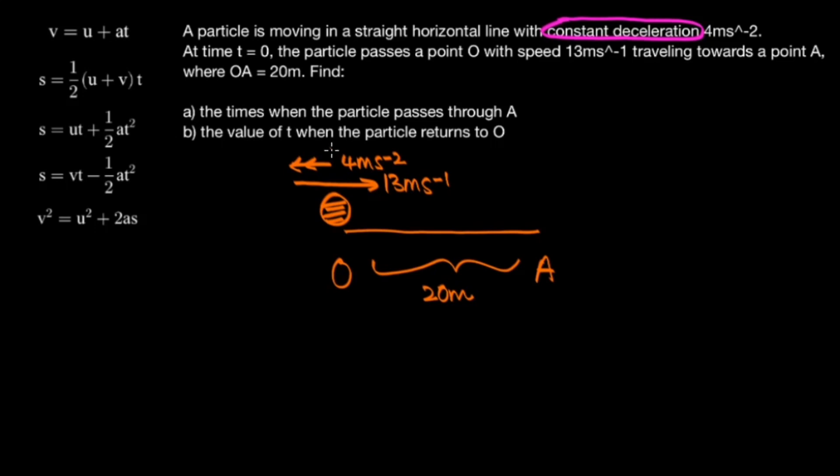Notice in the question that we're told to find the times when the particle passes through A. And so that implies that the particle is going to pass A traveling right, then decelerate to a velocity of 0 somewhere over here. And then it's going to start moving left and therefore pass A twice.